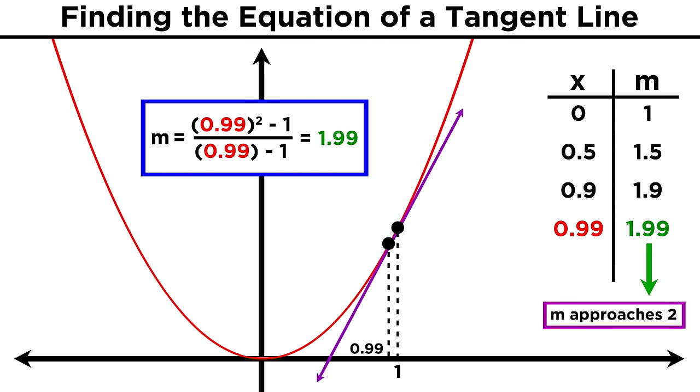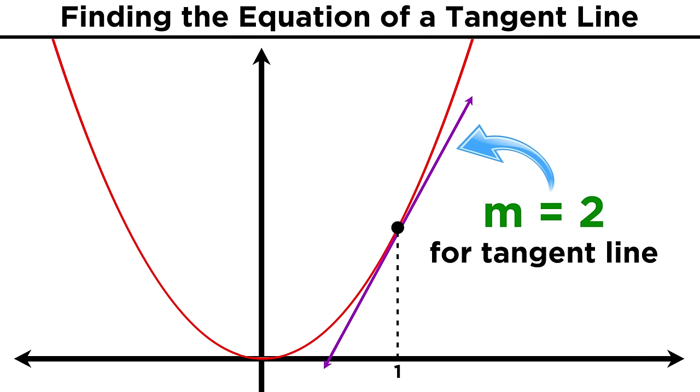The line gets closer and closer to becoming the tangent line, and we again approach a slope of two, just from the other direction. This would seem to suggest, or even demand, that the slope of the tangent line must be equal to two.